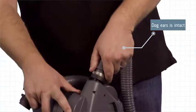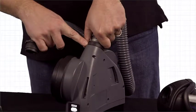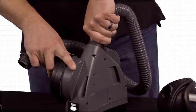Make sure that the dog ears are intact and then install the breathing tube into the unit by lining up the raised black line on the breathing tube to the raised gray arrow on the unit itself. Set the breathing tube in and turn.